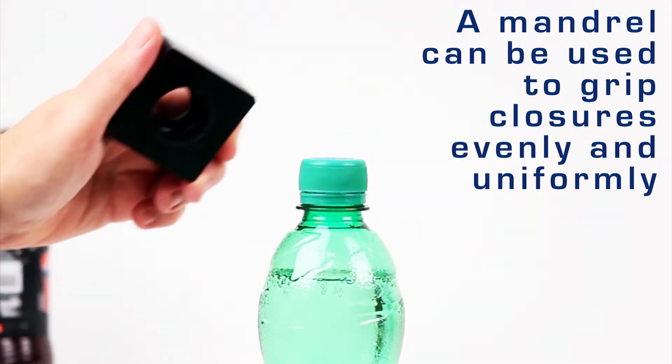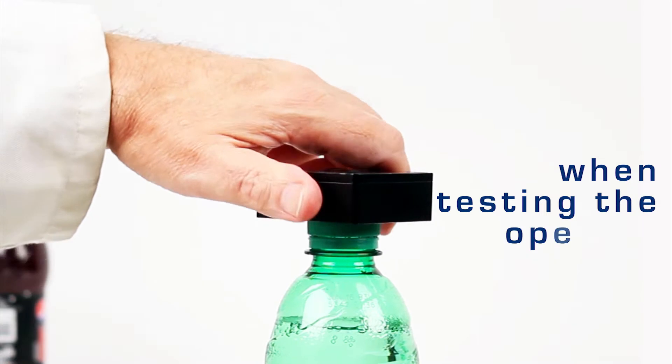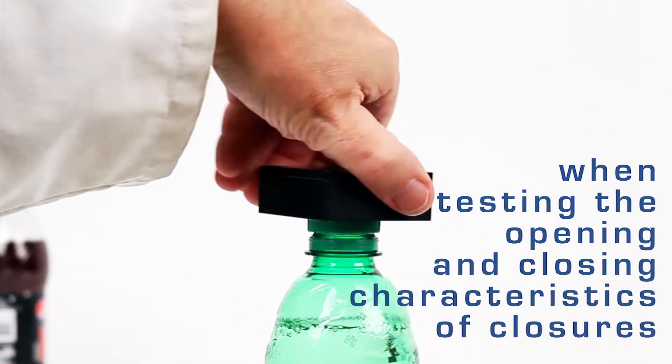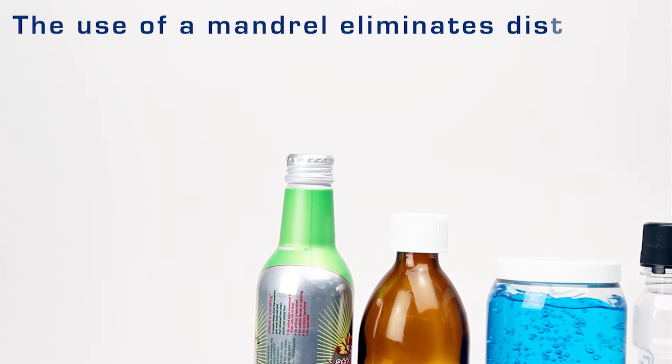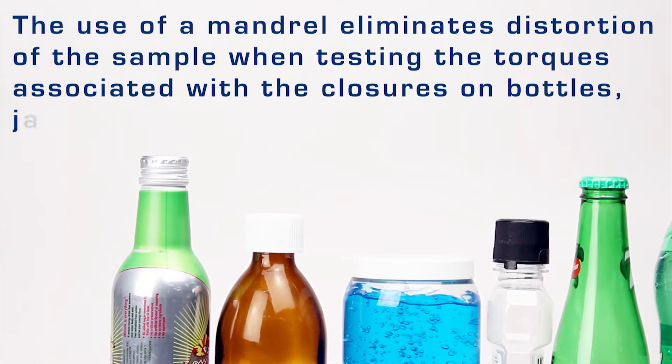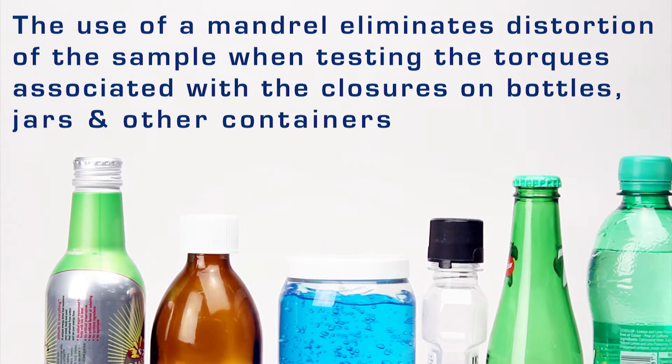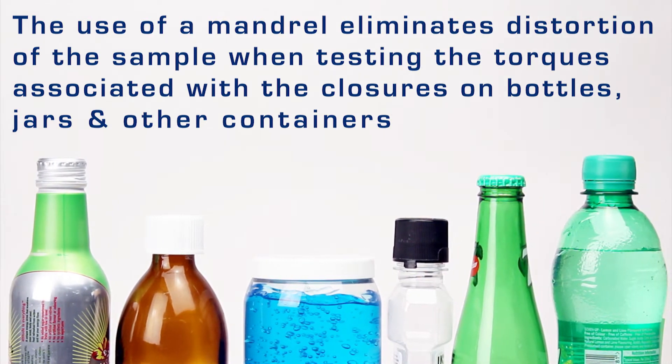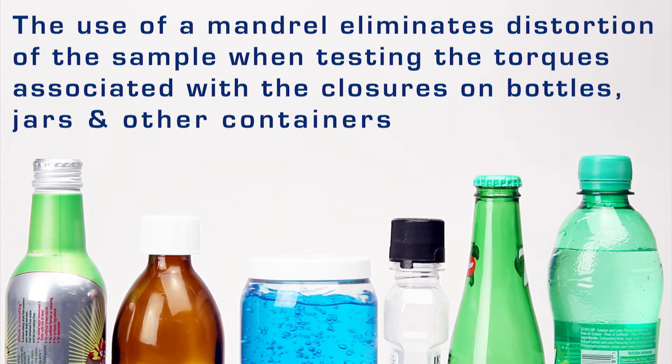To grip closures evenly and uniformly when testing the opening and closing characteristics of closures, we can use a mandrel. Because the mandrel is designed specifically for each closure, it also eliminates the distortion of the sample when testing the torques associated with the closures on bottles, jars, and other containers.